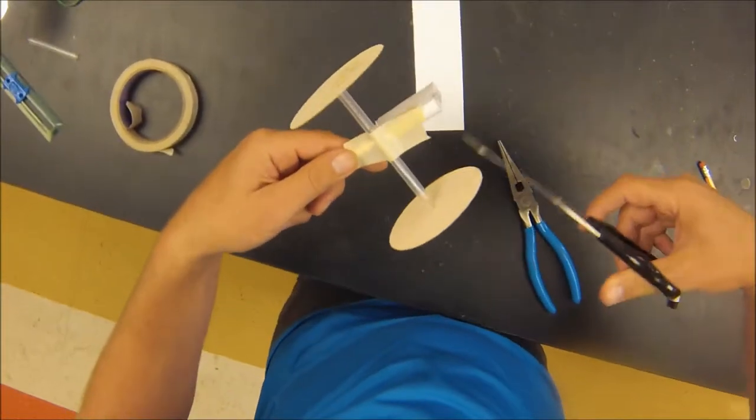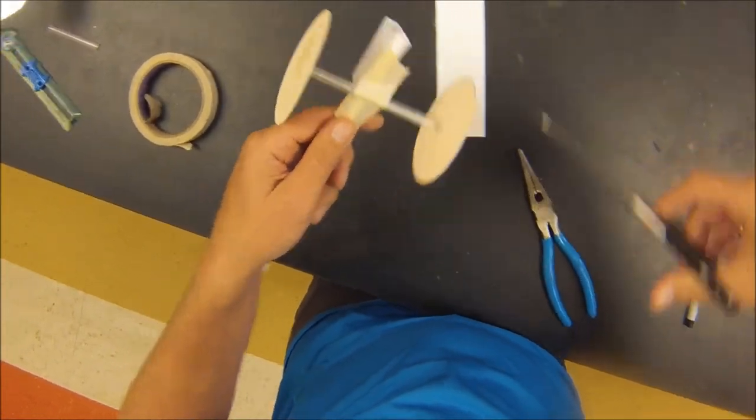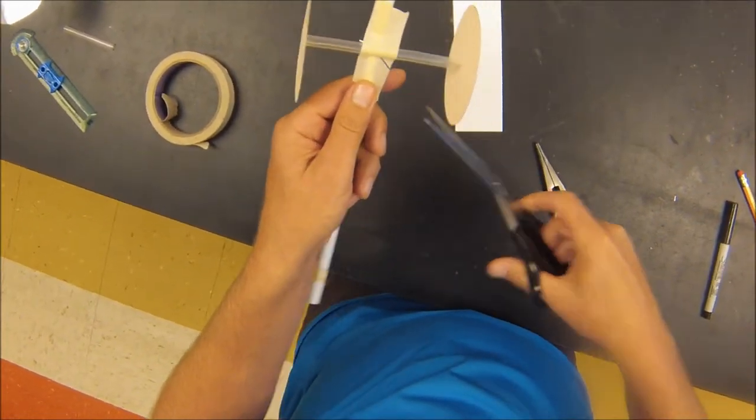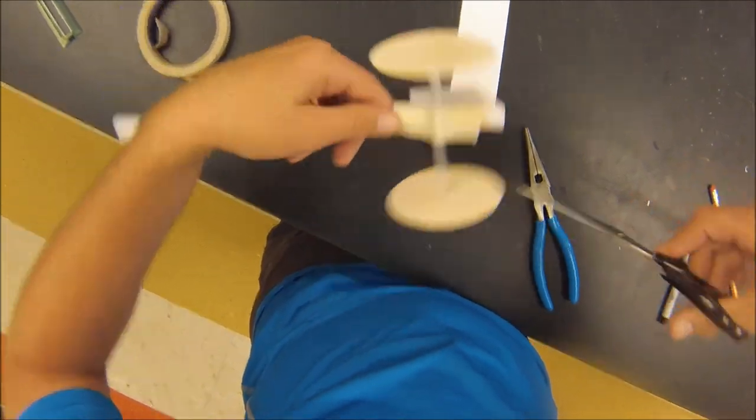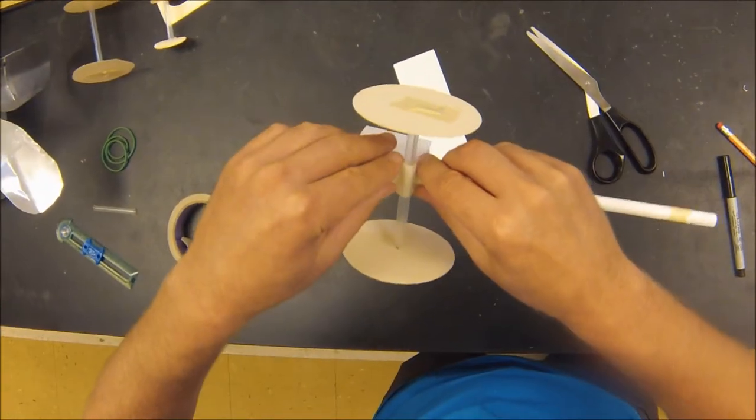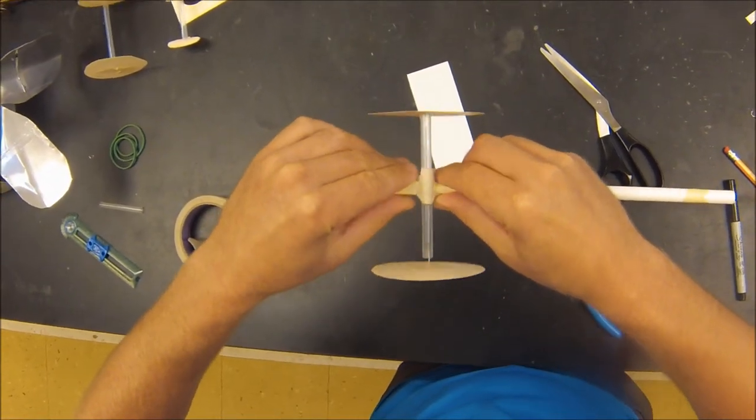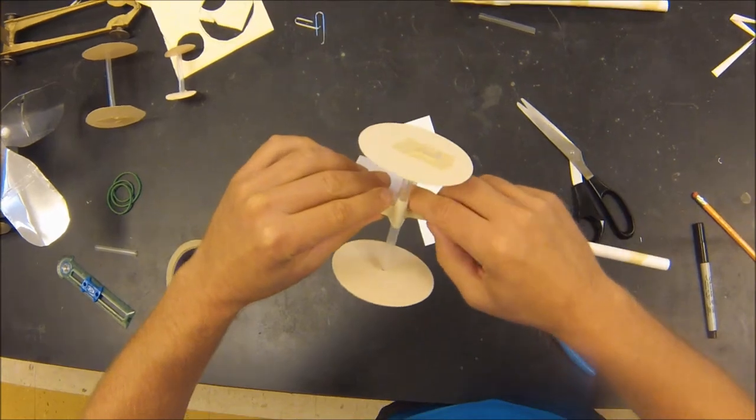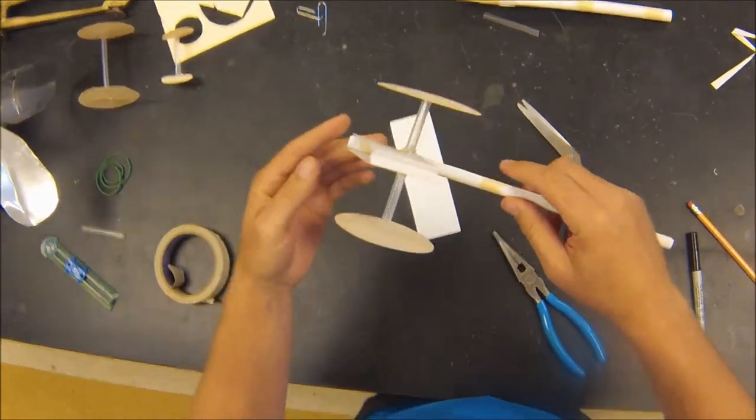And then what I like to do to help fold it around is I cut a couple of little slits all the way around it so that I can fold the tape over a little bit there. I might need another piece of tape, but that might work too.